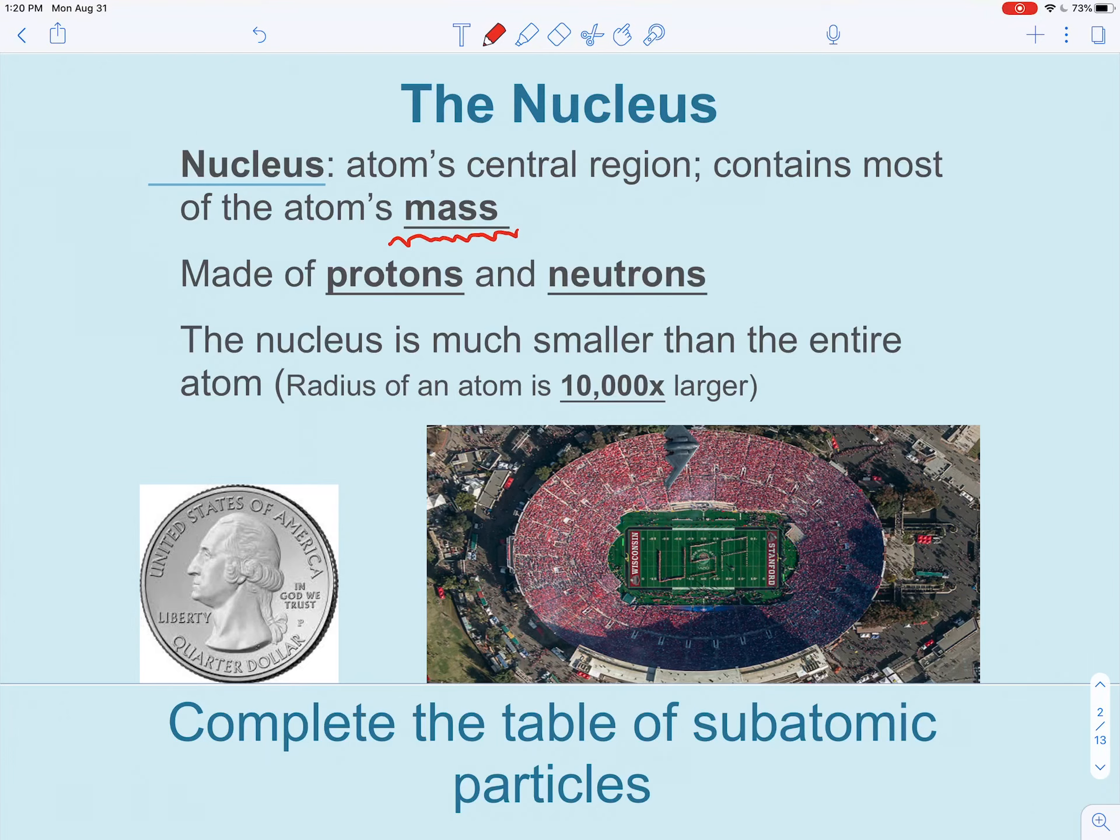The nucleus is really, really tiny compared to the entire atom. So if you want an idea of how tiny it is, if you had a football field and they do a coin toss in the beginning, the quarter, the coin that they toss, would be the size of your nucleus and then the rest of the football stadium would be basically the rest of your atom here. So really tiny compared to the entire thing.